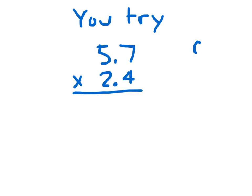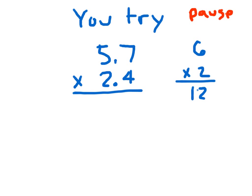Ignore the decimal place as you're multiplying — treat it as 57 times 24. The estimate is set up for you and should help you figure out where to put the decimal point. Hit pause.